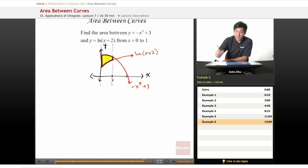Okay, so let's just go ahead and apply our theorem. Here, area equals from zero to one integrated negative x squared plus three minus ln of x plus two dx. So now we have to do is just solve this integral.